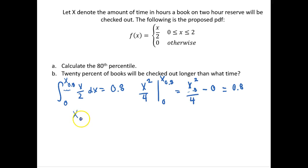So this 80th percentile value is equal to 4 times 0.8, so just multiply 4 to both sides and I'll get then this equal to 3.2.